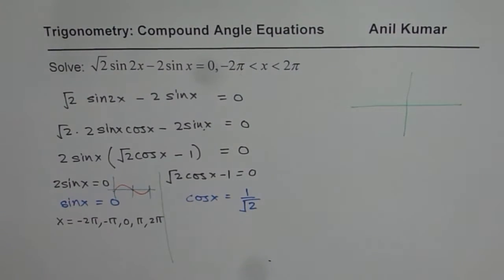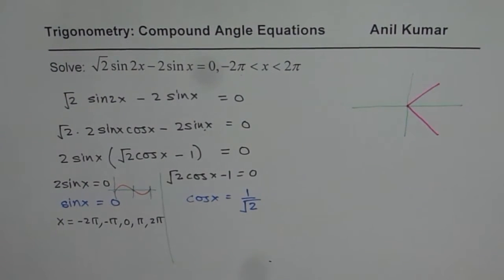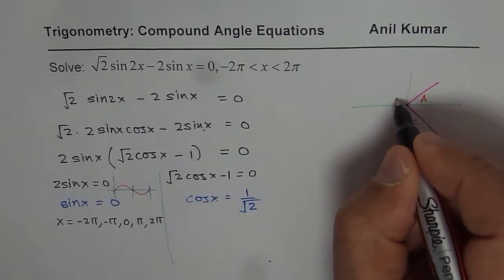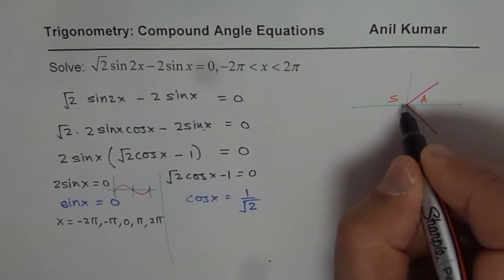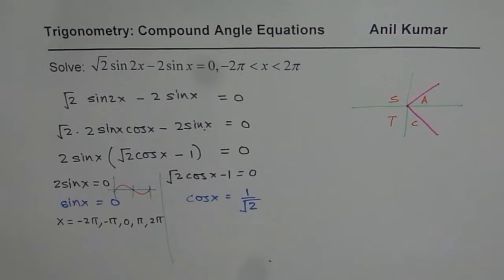Now cos x could be positive in quadrant 1 or in quadrant 4, correct? So there we get cos as positive. I hope you remember the cos rules. So all are positive in quadrant 1, sin in 2, tan in 3, cos in 4. So we have two possible solutions in 2π domain.